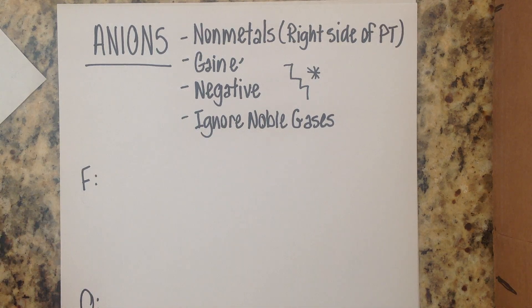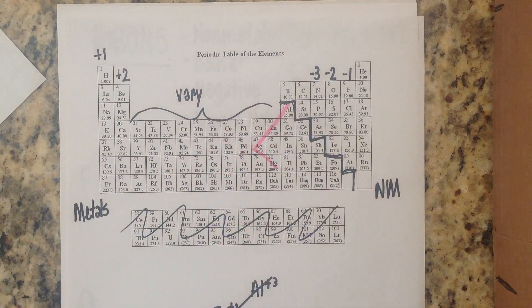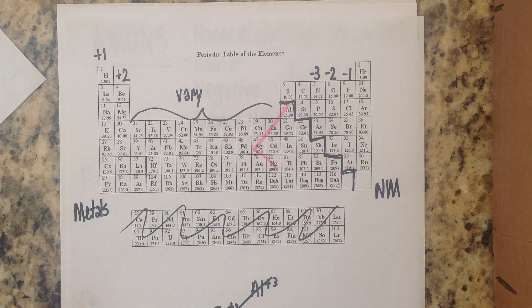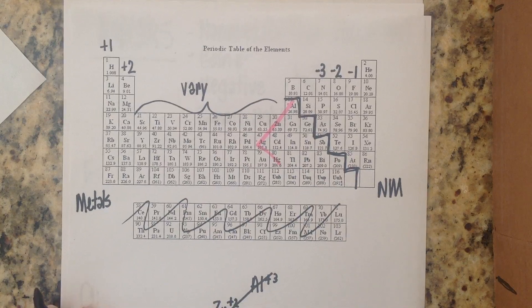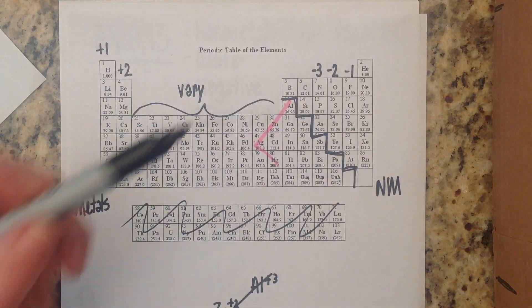Anions come from nonmetals and nonmetals are located on the right-hand side of the periodic table. We like to say to the upper right of the stair step line. So remember that our stairs start right below boron and then we just start stair stepping down.